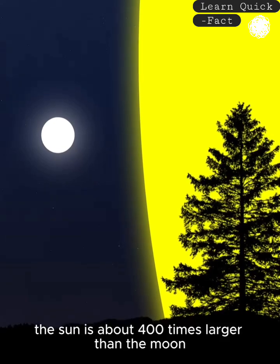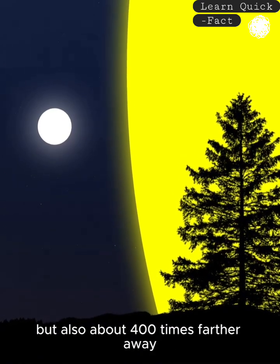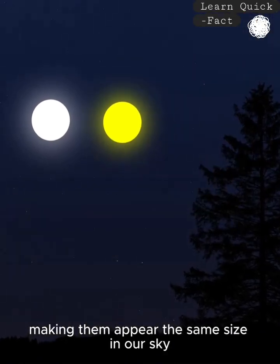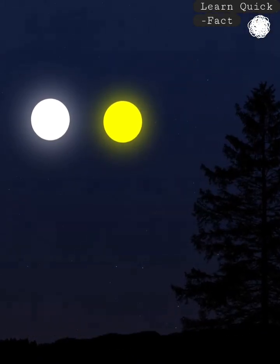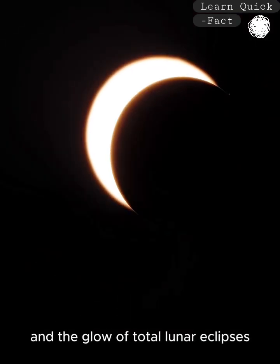The sun is about 400 times larger than the moon, but also about 400 times farther away, making them appear the same size in our sky. This creates effects like the ring of fire and the glow of total lunar eclipses.